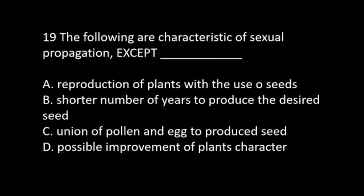Number 19. The following are characteristics of sexual propagation, except: A. Reproduction of plants with the use of seeds. B. Shorter number of years to produce the desired seed. C. Union of pollen and egg to produce seed. D. Possible improvement of the plant's character. The answer is B. Shorter number of years to produce the desired seed.